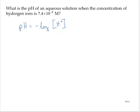So in this problem, we are given the concentration of hydrogen ions. So then the pH would be equal to negative log of 7.4 times 10 to the negative fourth power.